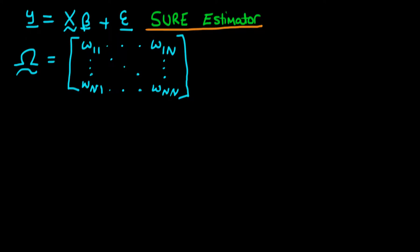In this video, we're going to continue our discussion of SURE systems and we're actually going to derive what is known as a SURE estimator, which is a type of GLS estimator.